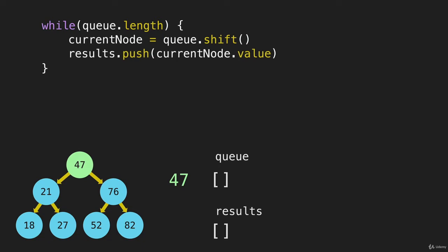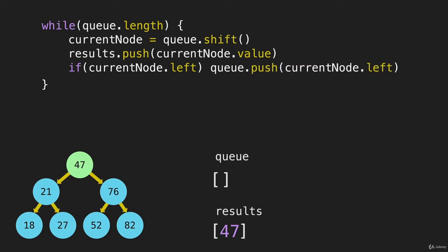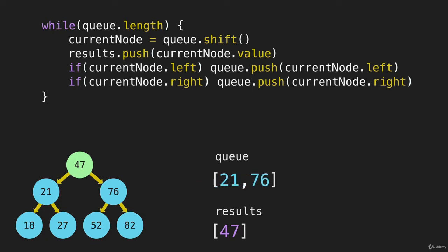First, we're gonna take the value from that current node and push it into the results array. Then we're gonna go left and go right. We have to say if there is something to the left, then we will push that node on the left — current node dot left — into the queue. And then if there is something on the right, we'll do the same thing, pushing the current node that is on the right, which in this case is the 76. And that's everything for our while loop.